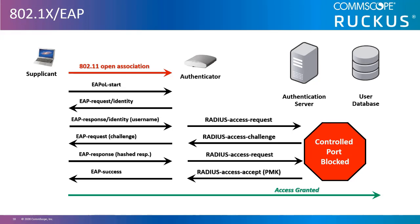In this process, the supplicant, or client device wishing to join the basic service set, sends EAP messages to the authenticator, which can be the access point or a wireless LAN controller. These EAP messages between the supplicant and the authenticator are translated to RADIUS messages between the authenticator, the access point, and the authentication server, which is usually a RADIUS server.